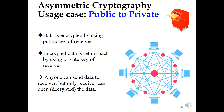Now let's see how asymmetric cryptography is used in blockchain. There are two usage cases. The first is public-to-private key. In this usage case, similar to when you use PostMail, the data will be encrypted using the public key of the receiver. And then at the receiver side, the receiver will decrypt the data using their own private key. By using this way, anyone in the network can send the data to the receiver, but only the receiver can open or decrypt the data.